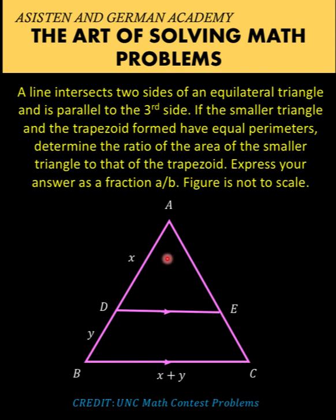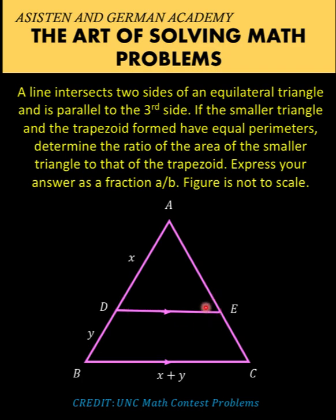Since our triangle is equilateral and segment DE is parallel to segment BC, angle B must be the same as angle ADE. The triangle at the top is also an equilateral triangle: this angle is 60 degrees, this angle is equal to angle C so it is also 60 degrees, and angle A equals itself.